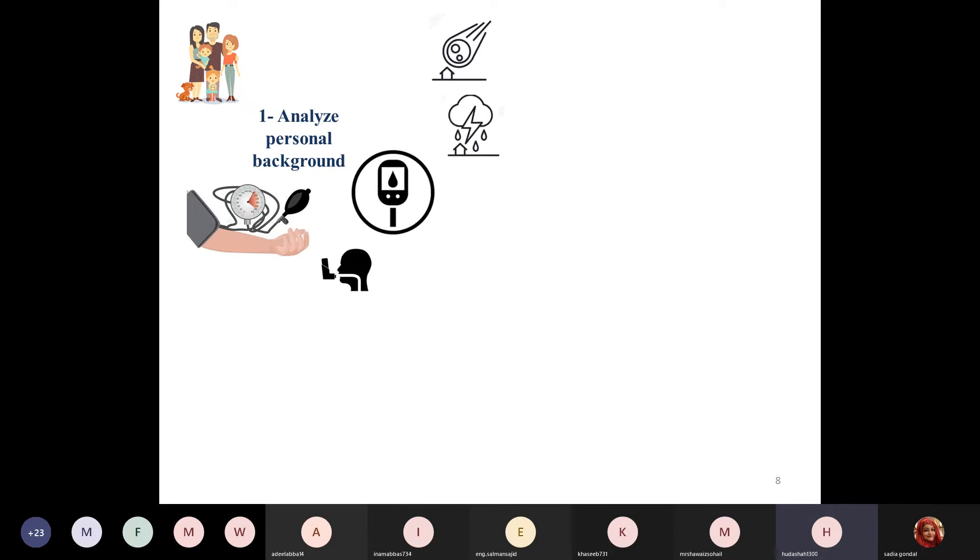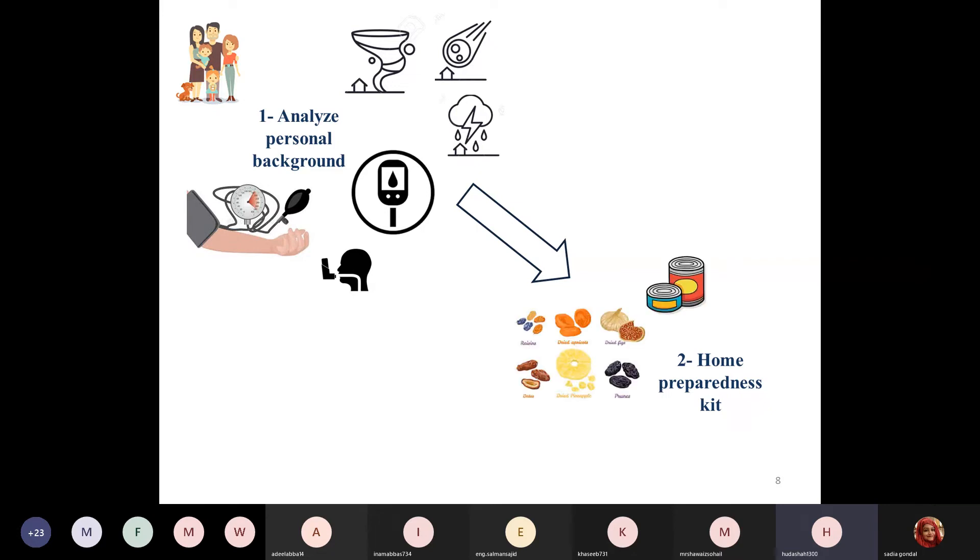The second step is the home preparedness kit. For the home preparedness kit you must have a good stock of food including dried foods, canned foods, meals ready to eat, and some refreshing items like biscuits and chocolates. A very good stock of water, about three to seven gallons of water, and some water purification items like chlorine and iodine tablets.